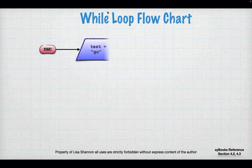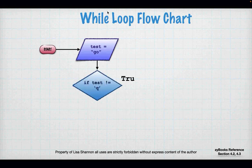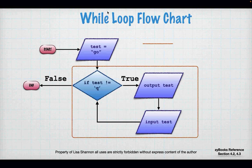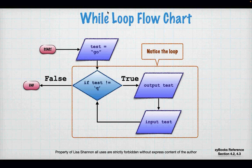Now let's look at it visually. We have `test` equal to `go`. If test is not equal to Q and it's true, I'm going to output test and then input test. If it's false, I stop. When dealing with a flowchart you'll notice I used the word `if` in the diamond — not `while`. While is just allowing the loop to continue. The orange box is really the heart of the loop, and you can follow the arrows to see how they make a loop.